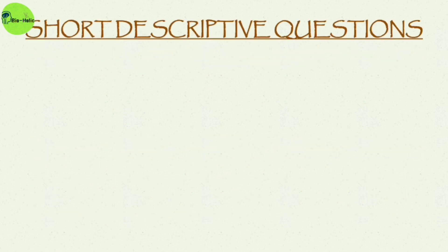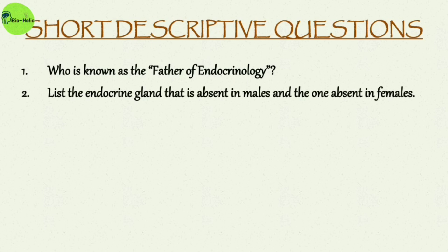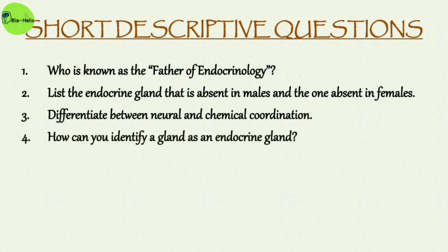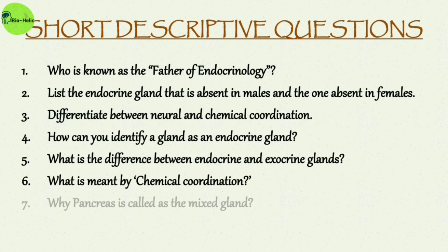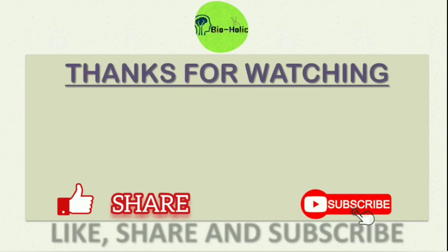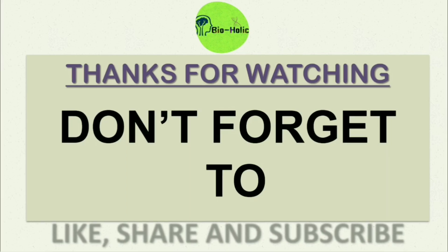Short descriptive questions: Who is known as the father of endocrinology? List the endocrine glands absent in males and those absent in females. Differentiate between neural and chemical coordination. How can you identify a gland as an endocrine gland? What is the difference between endocrine and exocrine glands? What is meant by chemical coordination? That's all for today — thanks for watching. Don't forget to like, share, and subscribe to Bioholic, and press the bell button for notifications. Next Friday we will learn about hormones in detail.